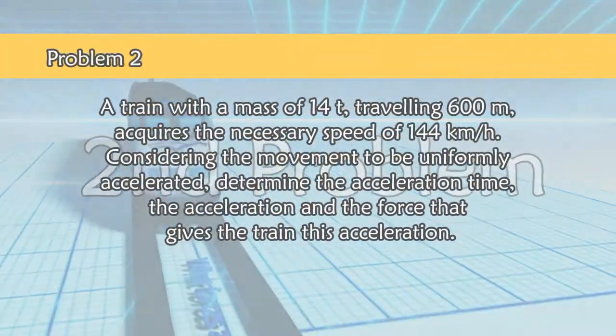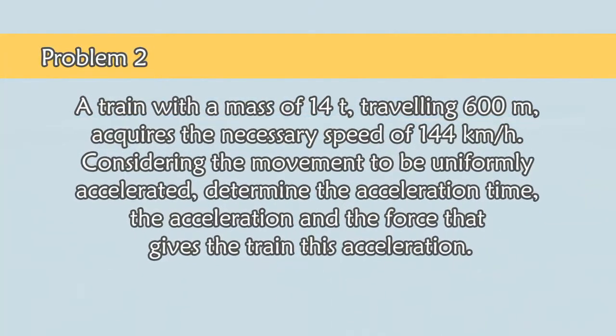Let's check out another problem. A train with mass of 14 tons traveling 600 meters acquires the necessary speed of 144 kilometers per hour. Considering the movement to be uniformly accelerated,